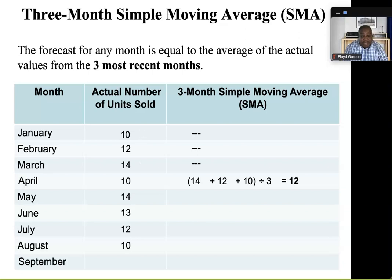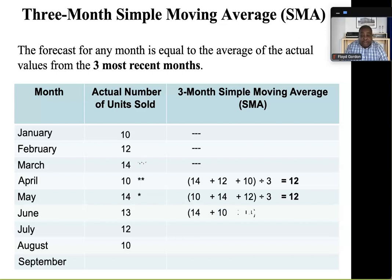For May, taking March, February, and January — the three previous months — divided by 3, gives a forecast also of 12. Moving on to June, we take April, March, and February divided by 3, which gives a forecast of 12.67 units. I like working with two decimal places for these forecasts.